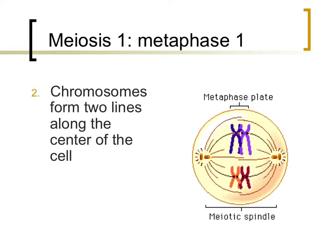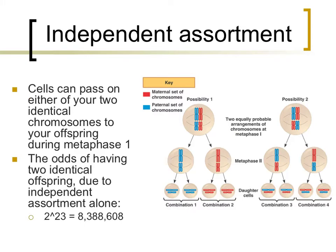During metaphase I of meiosis, spindle fibers attach to chromosomes and centrosomes, pulling them into two lines. Chromosomes match up as homologous pairs — chromosome 1 with the other chromosome 1, chromosome 15 with its homologous pair. Metaphase I is significantly different than metaphase in mitosis, where there is only one line of chromosomes along the center of the cell. During metaphase I of meiosis, chromosomes arrange themselves as homologous pairs.